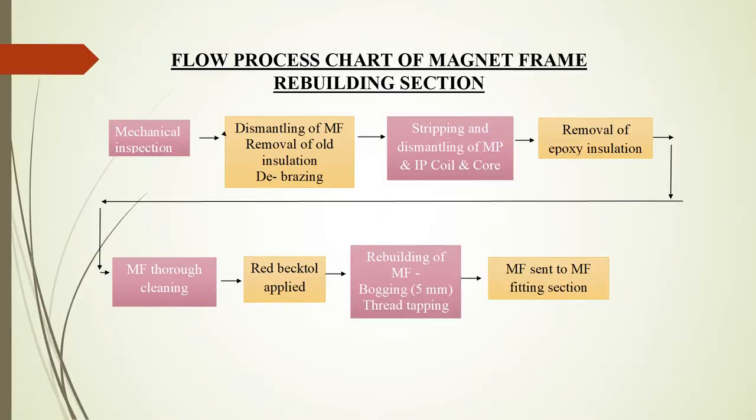In the magnet frame rebuilding section, mechanical inspection is carried out, which includes crack detection. Mechanical faults such as crack, bolt break, and body break are detected in the magnet frame. The dimensions are checked against standard values. Then dismantling of the magnet frame takes place, involving removal of old insulation from the cable and covering of the coil top near joints with acetabuse powder to avoid unnecessary binding of coil insulation due to debris.